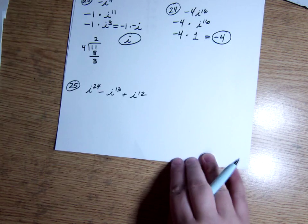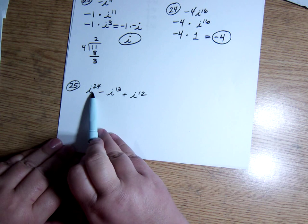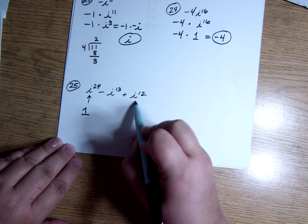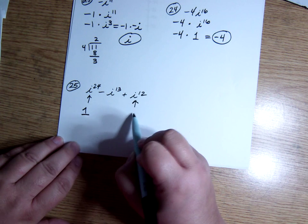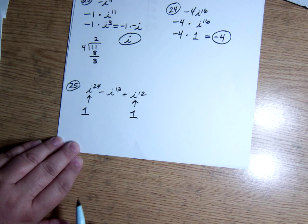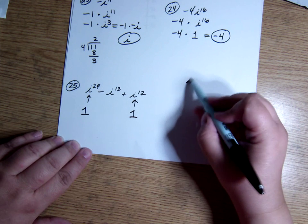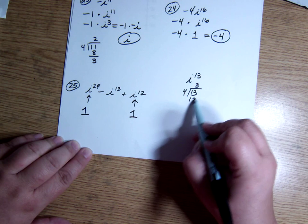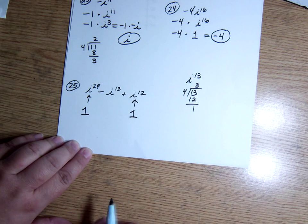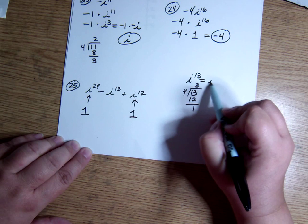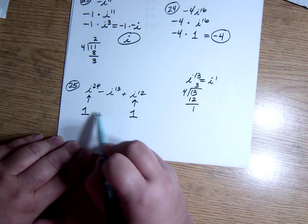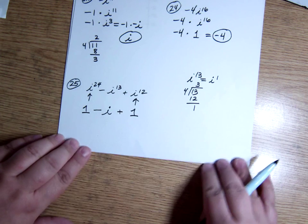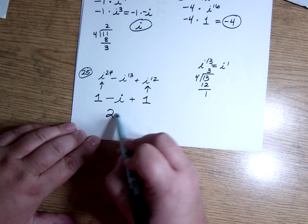And, last but not least, on number 25, this is a multiple of 4. So this is just 1. This is a multiple of 4, 12 is a multiple of 4. So this is also just 1. i to the thirteenth: thirteen divided by 4 goes 3 times with 1 left over. So i to the thirteenth is the same as i to the first, which is just i. So I have 1 minus i plus 1, which is 2 minus i.